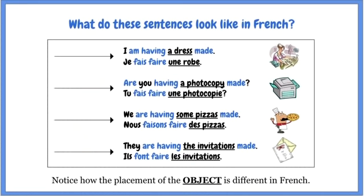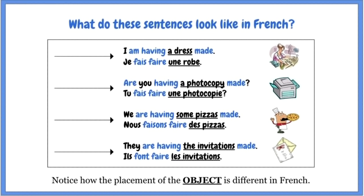So if I'm having a dress made: je fais faire une robe. If I said je fais une robe, it looks like I'm the one making the dress. But je fais faire une robe — I'm having it made by someone else. Tu fais faire une photocopie. Nous faisons faire des pizzas. Ils font faire les invitations. It looks funny, this faire faire thing, but it's used all the time.